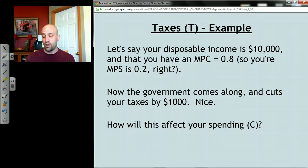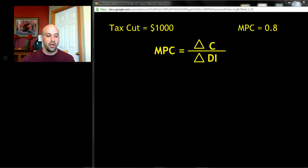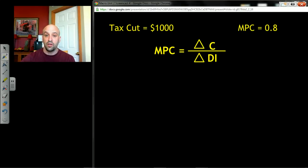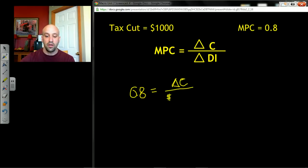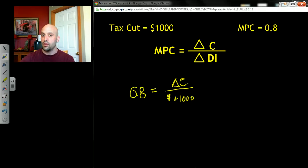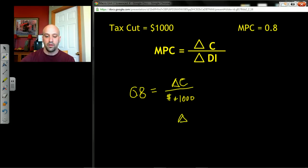We're going to figure out how much more money you're going to spend. I'll show you the math. We have a tax cut of one thousand dollars, we know MPC is 0.8, and the formula for MPC is the change in consumption divided by the change in disposable income. So: 0.8 equals the change in consumption — that's what we're solving for — divided by the change in disposable income, which is plus one thousand dollars. Cross-multiplying, the change in consumption equals 0.8 times one thousand dollars.